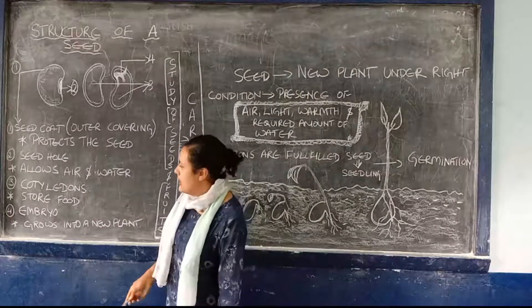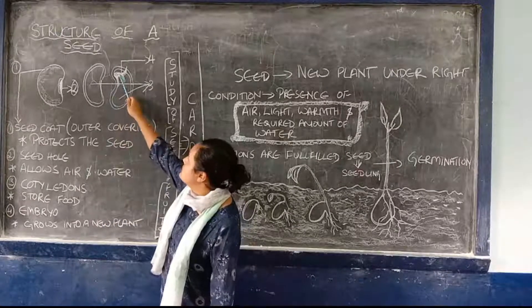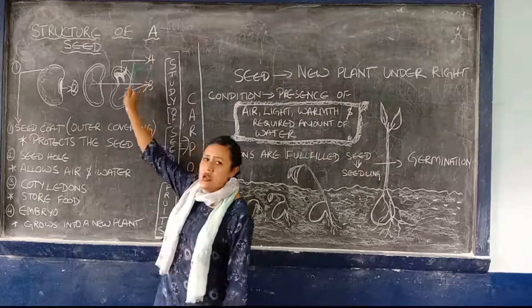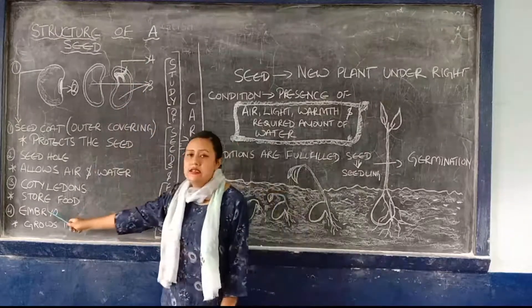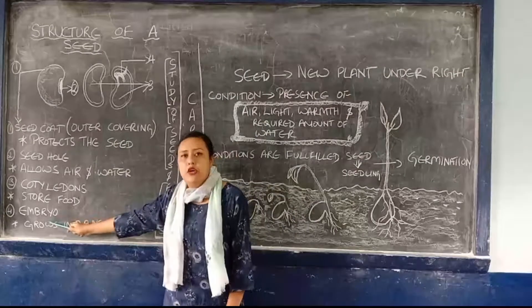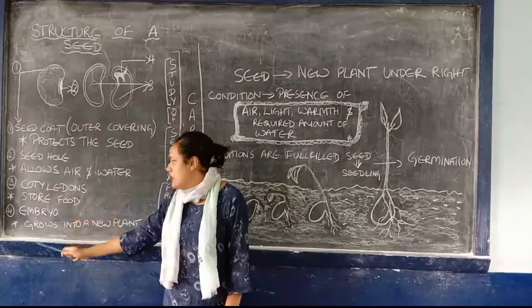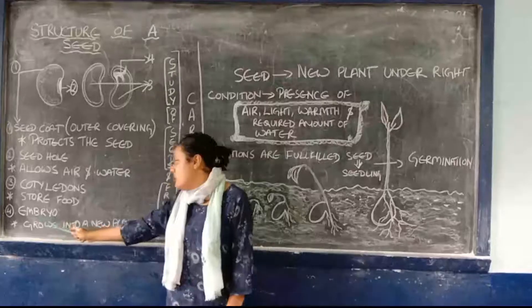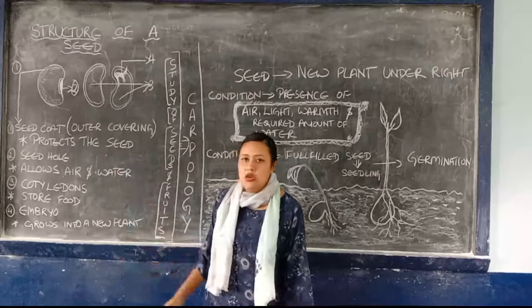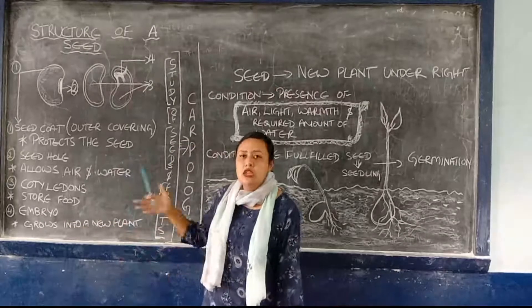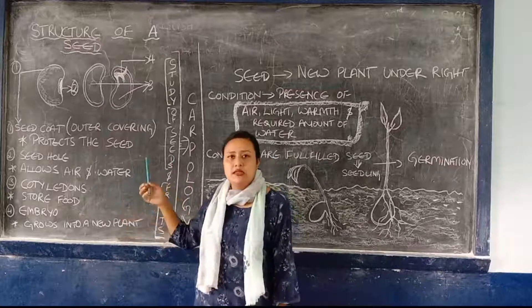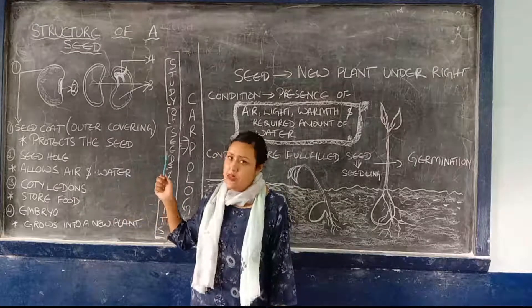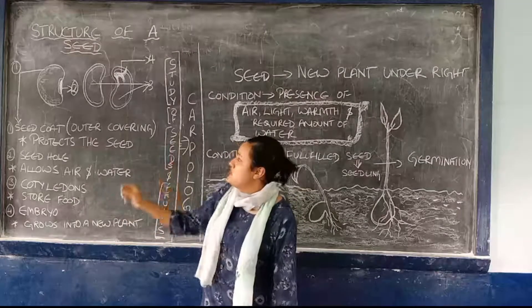Then the fourth structure you can see here is known as the embryo. And this embryo, it grows into a new plant or a seedling. These are the main structures of a seed.